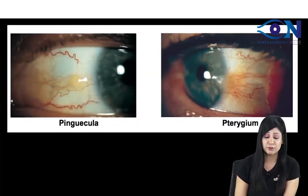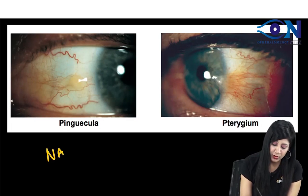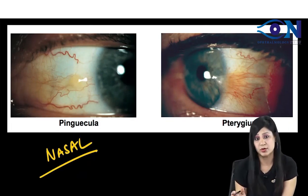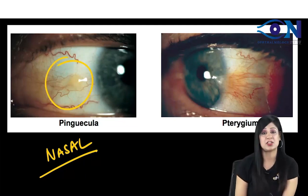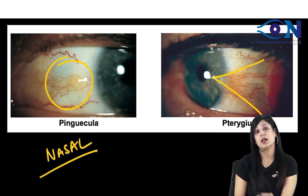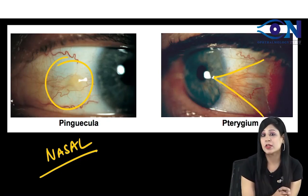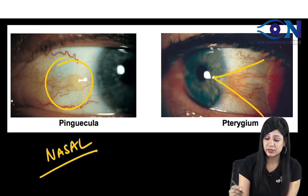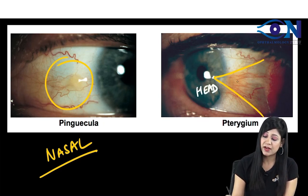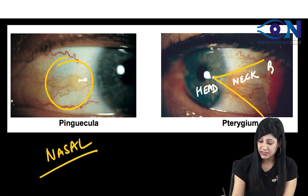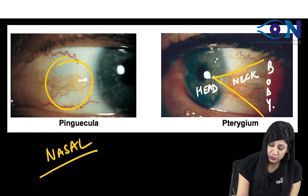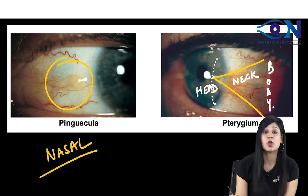If you look at pinguecula and pterygium, first of all they are more common on the nasal side, while the Bitot spots are more common on the temporal side. Pinguecula is just a discoloration. In pterygium, you get a triangular growth from the conjunctiva growing over the cornea, and it has three parts. This is the head or apex part, then we have the neck part, and this is called the body. At the apex, sometimes we also get a deposition.